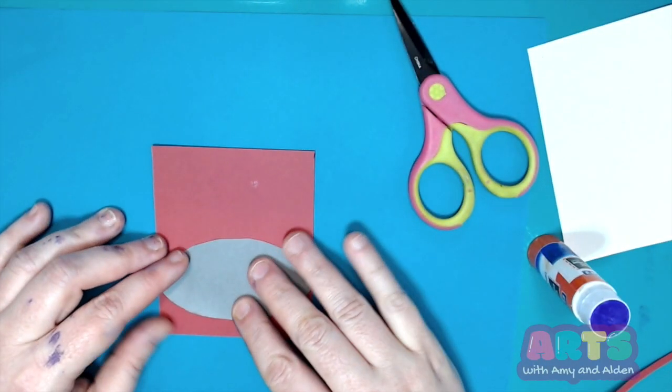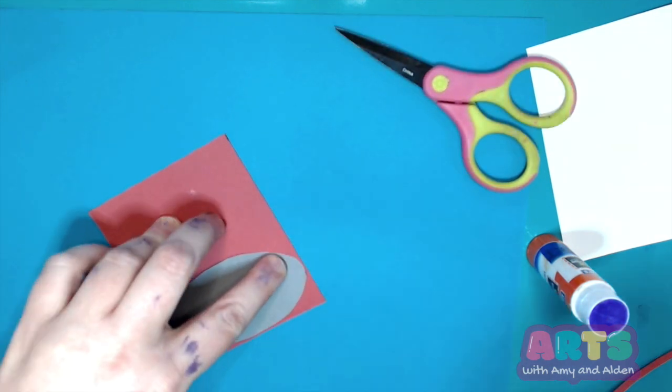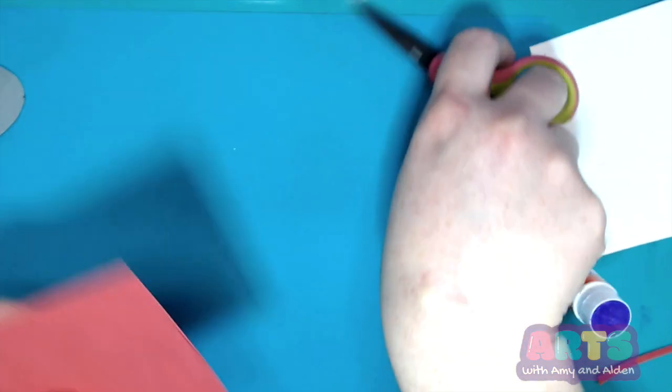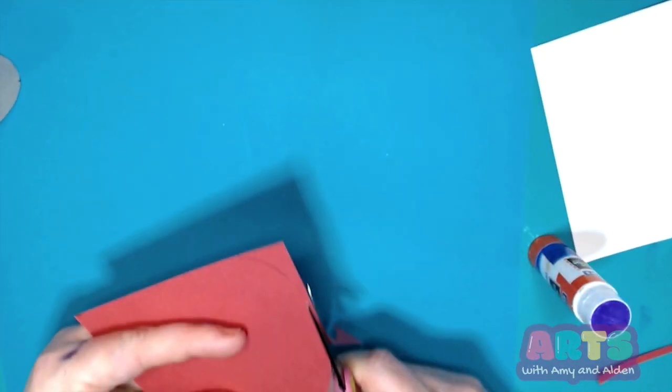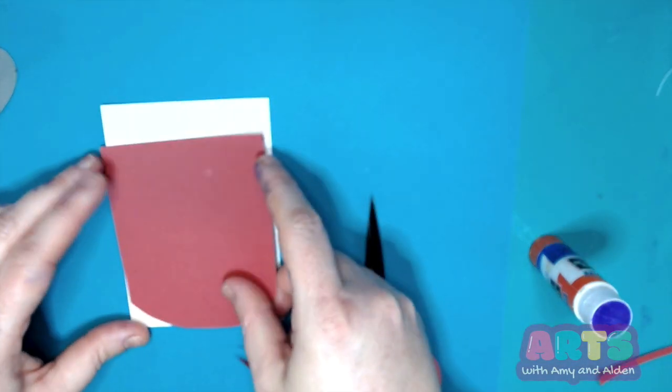So next I'm going to take that oval and I'm going to trace the bottom of that oval onto the bottom of my red paper. I'm also going to do this on the white paper too. This is going to give the illusion that this can is a cylinder shape and not just flat. So now I'm going to glue